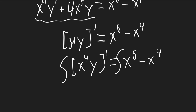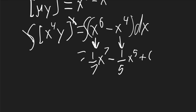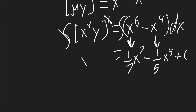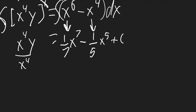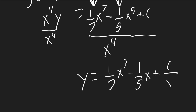We can now integrate both sides. On the left, the integration cancels with the derivative, leaving x to the 4th times y. On the right, the integral of x to the 6th is 1/7 x to the 7th, and the integral of x to the 4th gives 1/5 x to the 5th, plus C. Dividing all terms by x to the 4th, y equals 1/7 x cubed minus 1/5 x plus C over x to the 4th.